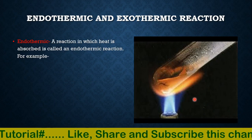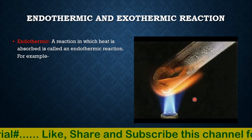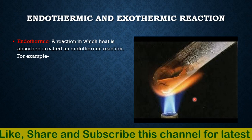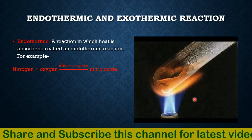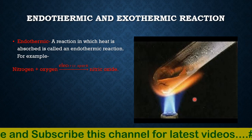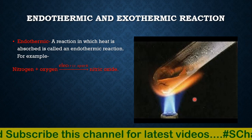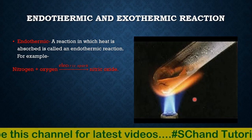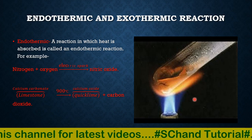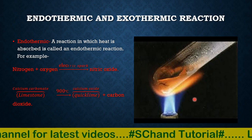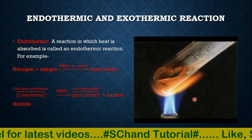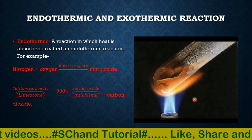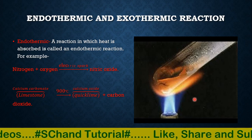The reaction in which heat is absorbed is called an endothermic reaction — we are giving heat to the reactants. For example, nitrogen and oxygen during an electric spark change into nitric oxide — heat is absorbed in the form of the electric spark. Another example: calcium carbonate (limestone) heated at 900 degrees Celsius forms calcium oxide and carbon dioxide — again heat is absorbed in this case.